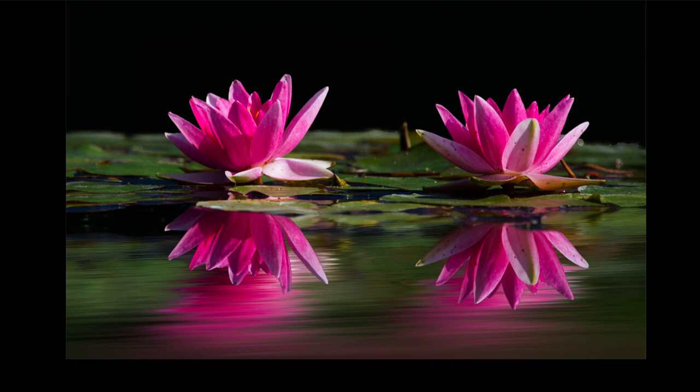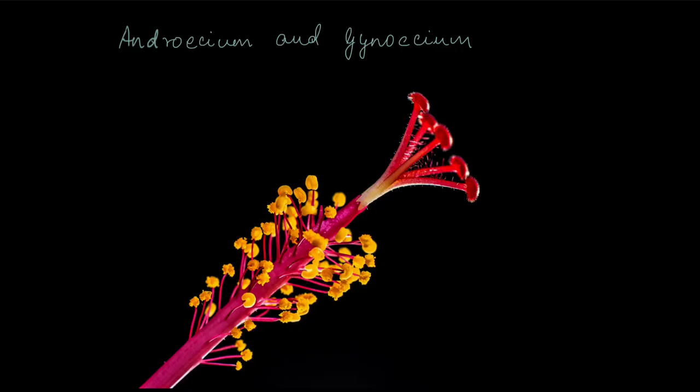When we hear the word flower, what we think of is these brightly colored petals. But the flower, as we know, is the reproductive organ of a plant, and the petals aren't quite the reproductive parts of the flower. The reproductive parts are the androecium and the gynoecium. In this video, we are going to take a look at the androecium and the gynoecium and see how they are arranged differently in different types of flowers.